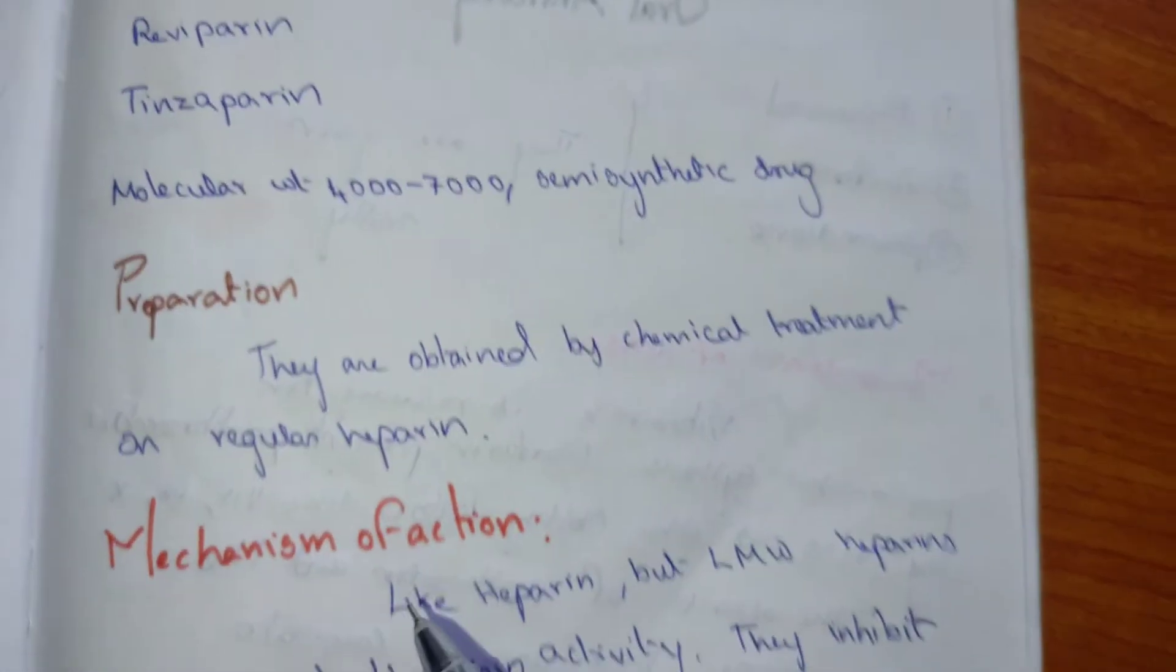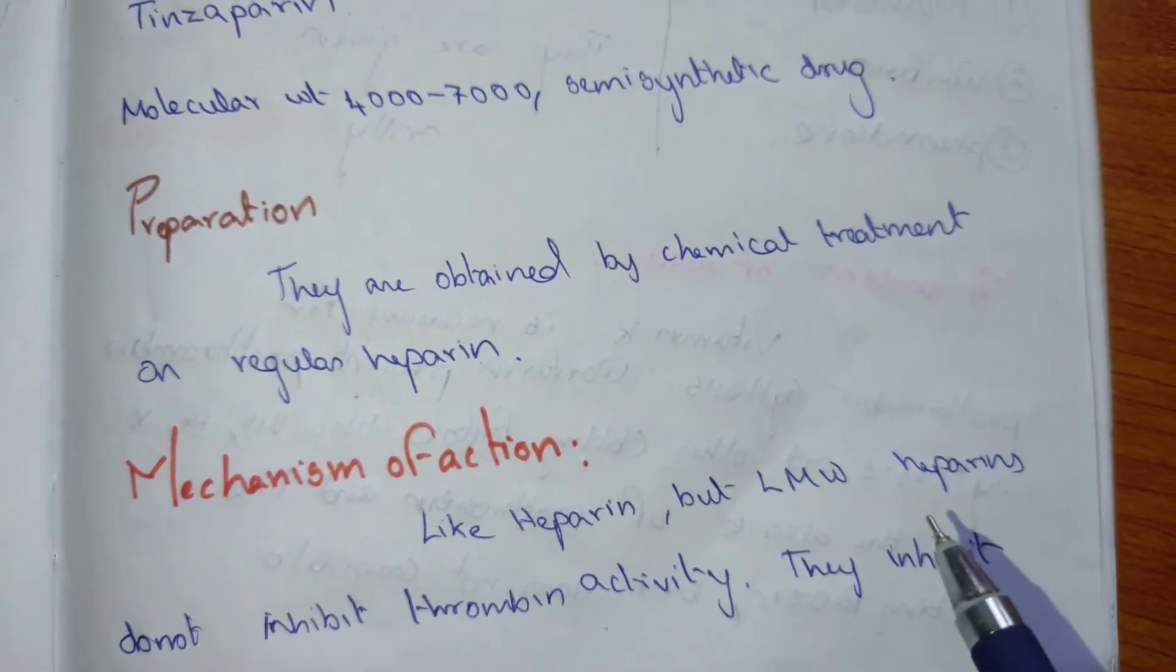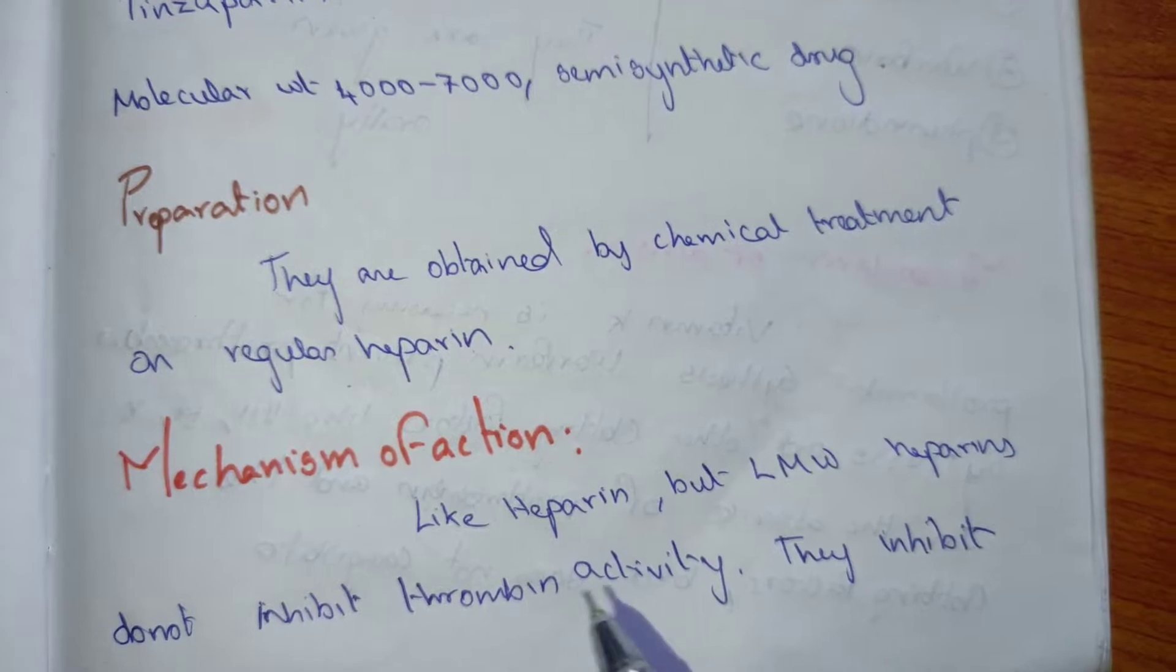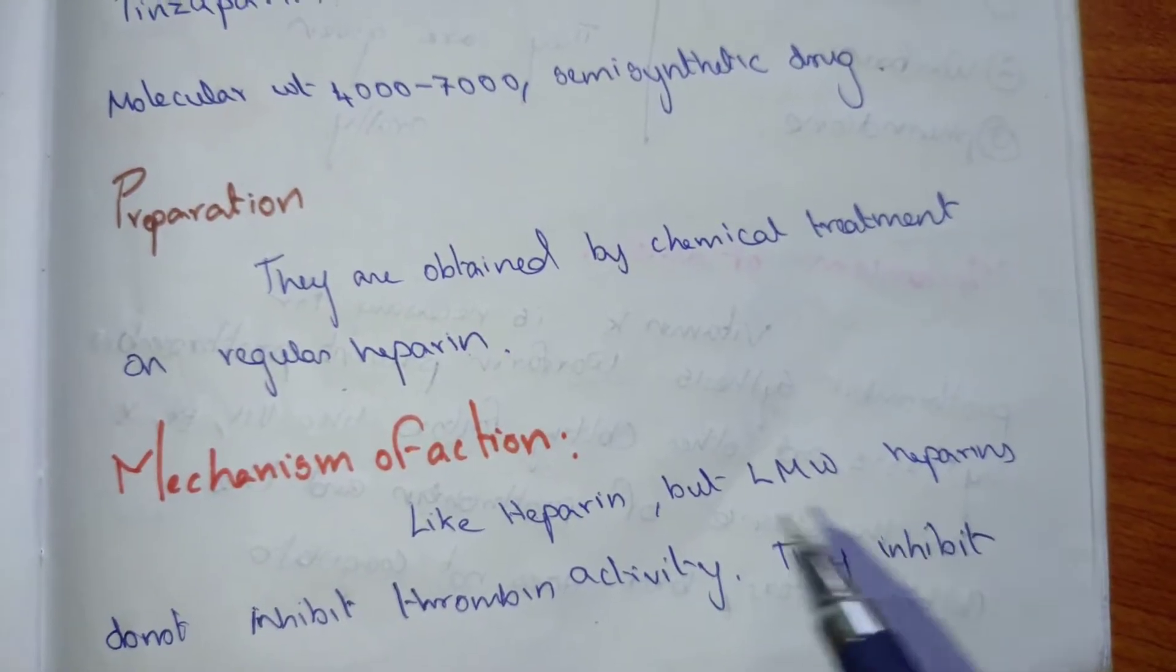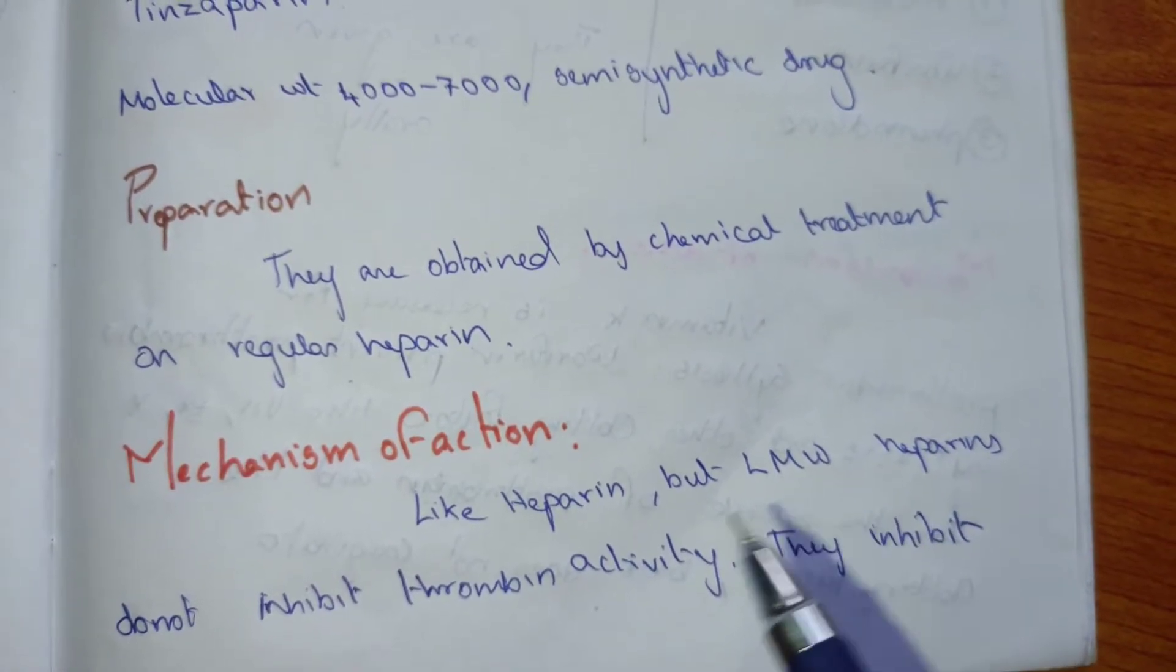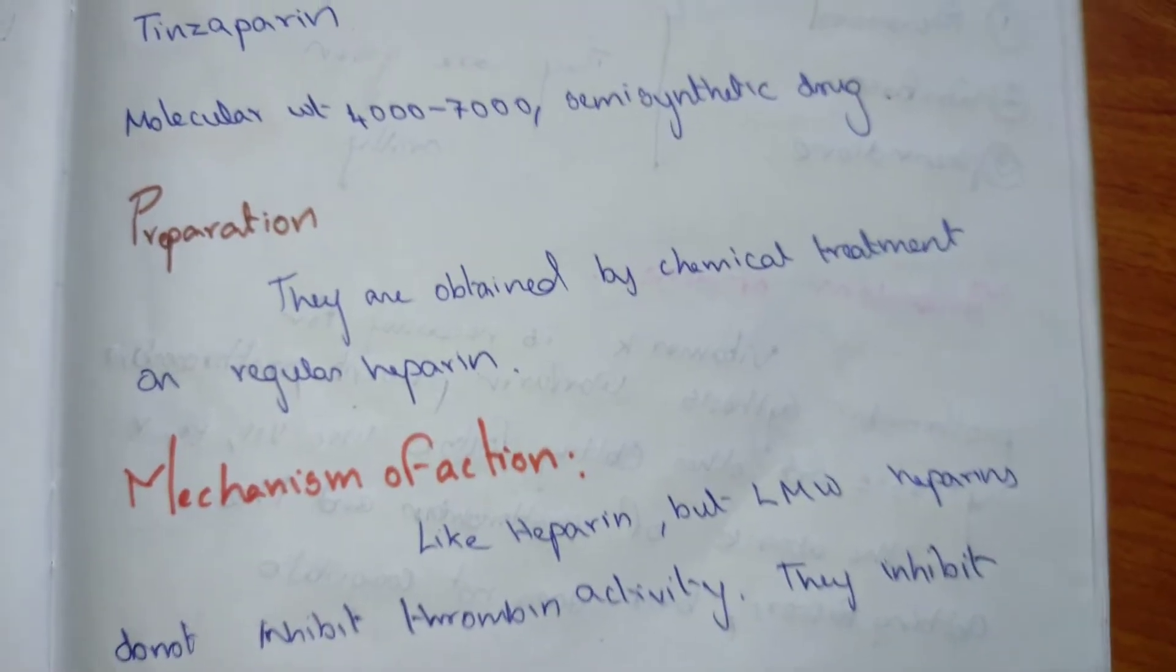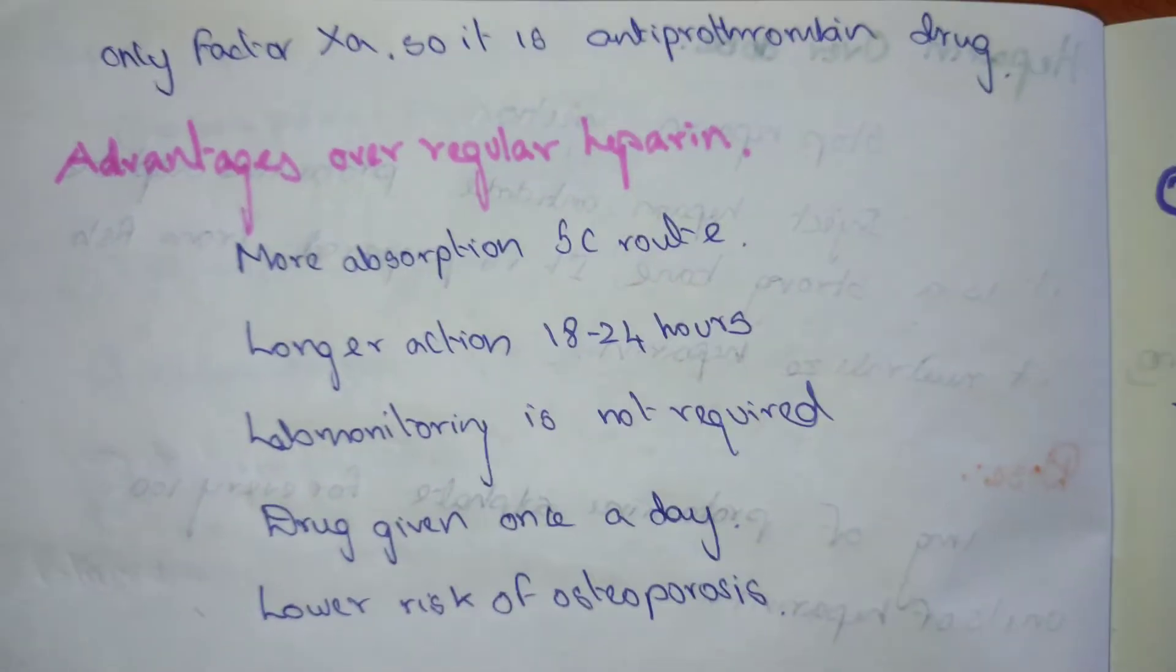Mechanism of action: it is same like heparin, but the low molecular weight heparin do not inhibit thrombin activity. They inhibit factor 10a, so they are known as antiprothrombin drug.